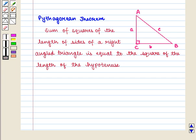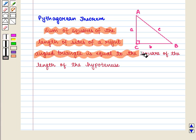We know that Pythagorean theorem states sum of squares of the length of sides of a right-angled triangle is equal to the square of the length of the hypotenuse.